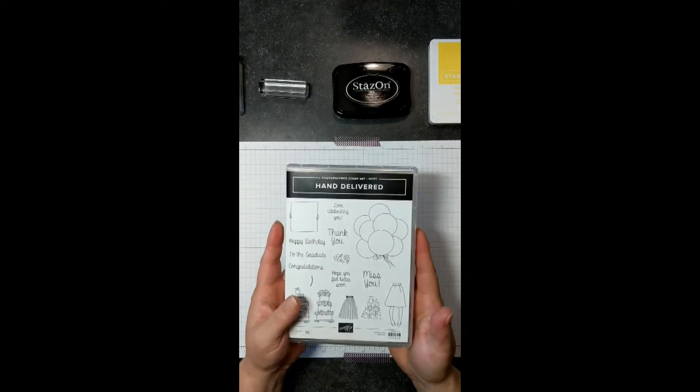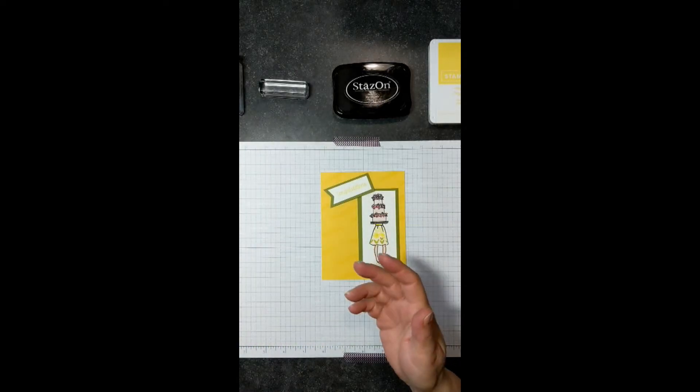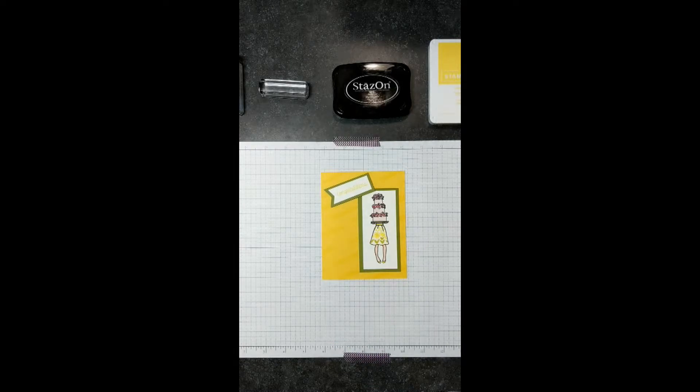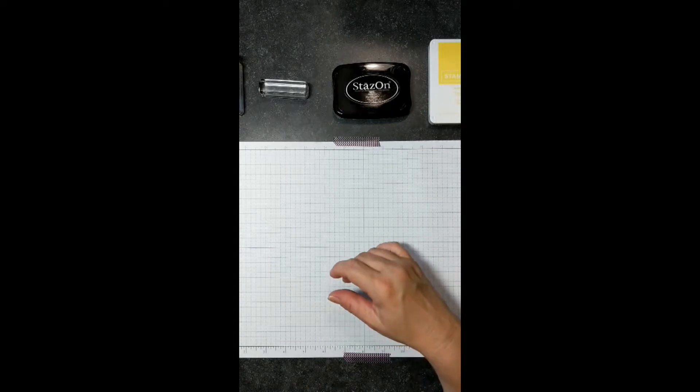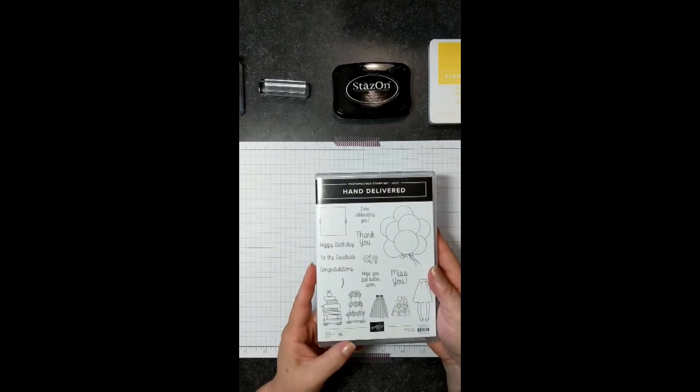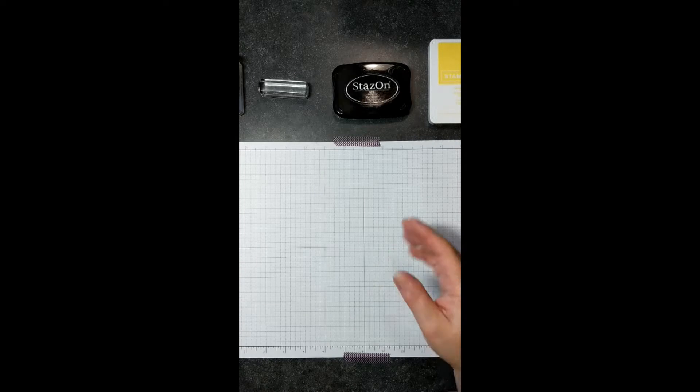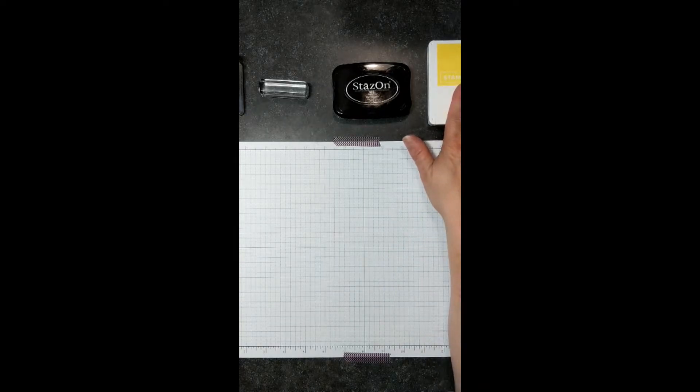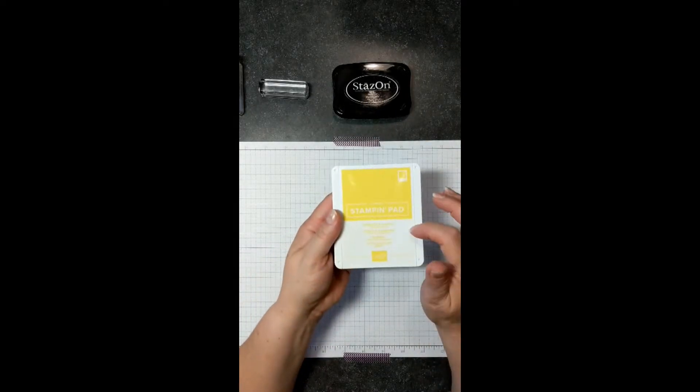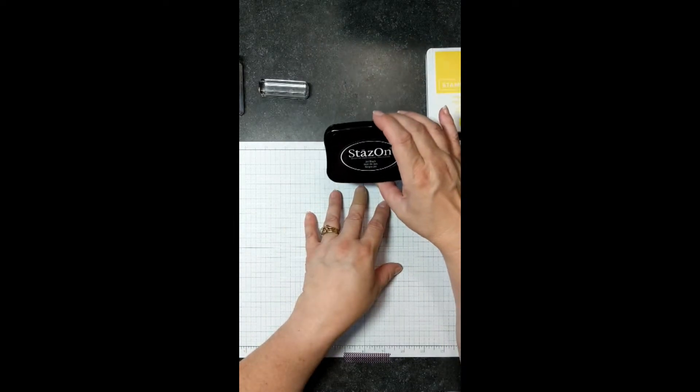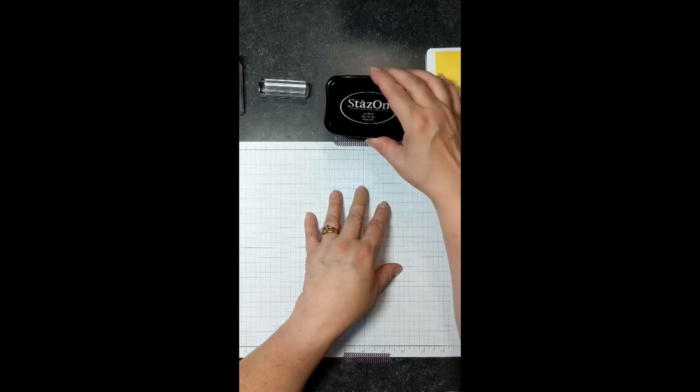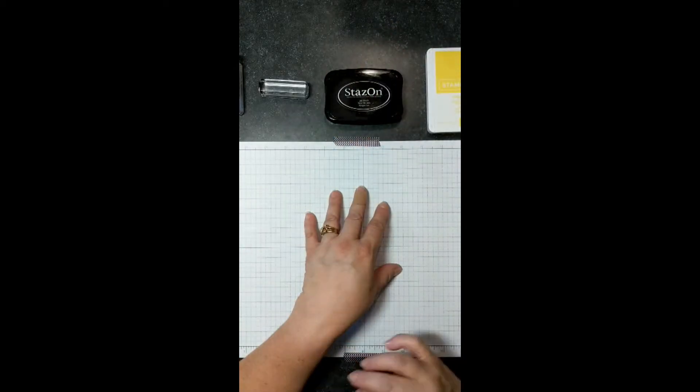So with that being said, we are going to go ahead and create this card. The items or the products that you are going to be needing for this card are just a few. Again, the hand-delivered stamp set, the pineapple punch ink pad, and then a black ink pad. I'm going to use Stazon today. You could also use Memento. Stazon was on the top of the pile.